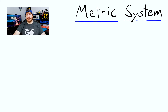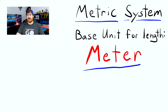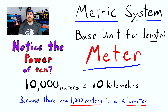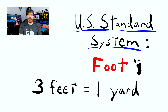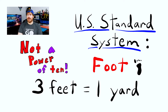For instance, the base unit for length in the metric system is the meter. Say you are working with very large distances such as 10,000 meters — you could call this 10 kilometers because there are 1,000 meters in a kilometer. To compare, the US standard system uses a foot, and the next step up would be the yard with three feet in a yard. It's not as easy to work with over a large or small range of distances.